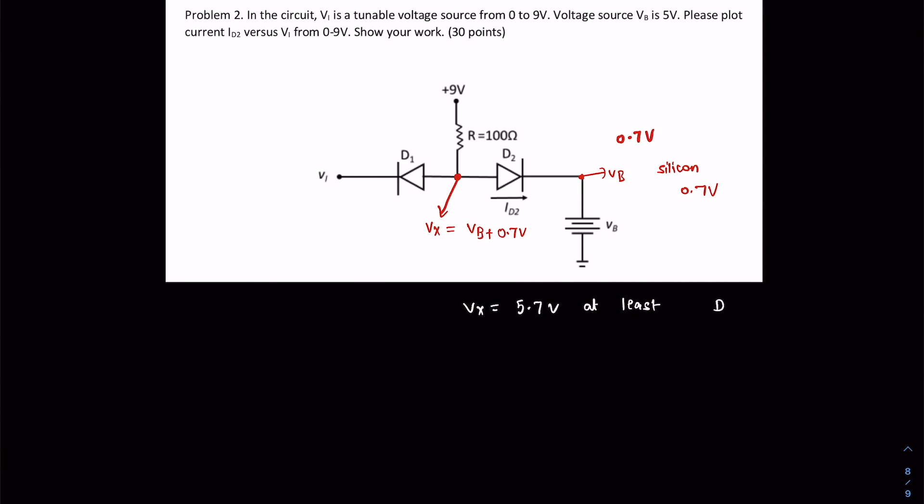In this case, ID2 is nothing but the current flowing through resistance R, because whenever it is 5.7 volts.